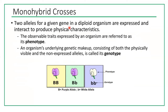Two alleles for a given gene in a diploid organism interact to produce physical characteristics. The observable traits expressed by an organism are called its phenotype. An organism's underlying genetic makeup — consisting of both physically visible and non-expressed alleles — is called its genotype. For example: BB (homozygous dominant) and Bb (heterozygous) both have the phenotype of purple flower, while bb (homozygous recessive) has white flower phenotype.